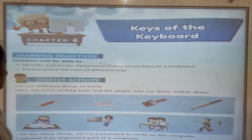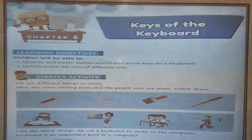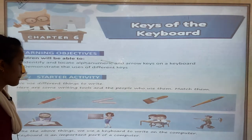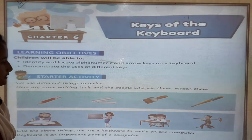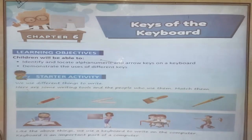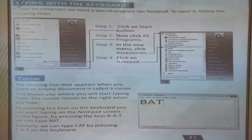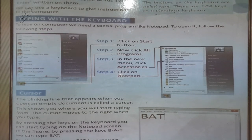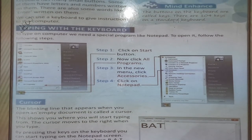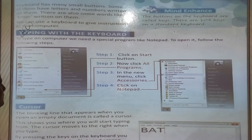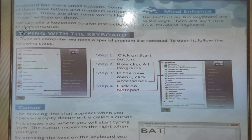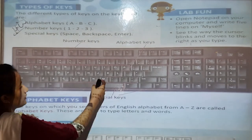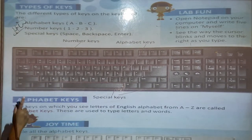So you can see the pictures. We use different things to write, like pencil, pen, marker, and keyboard. So keyboard has many small buttons. Some of them have letters and numbers written on them. You can see the keyboard has so many buttons and we can write through these buttons.